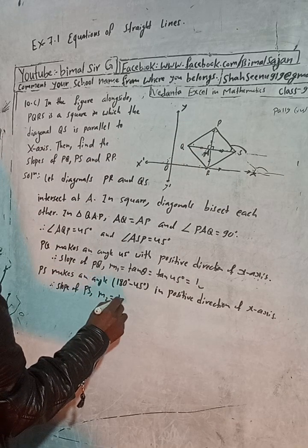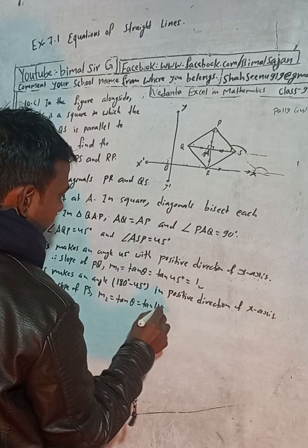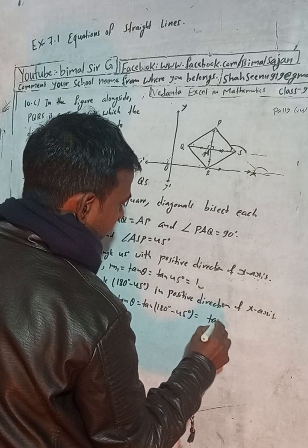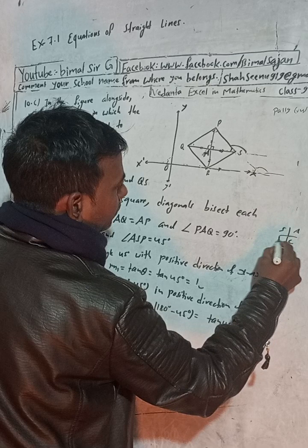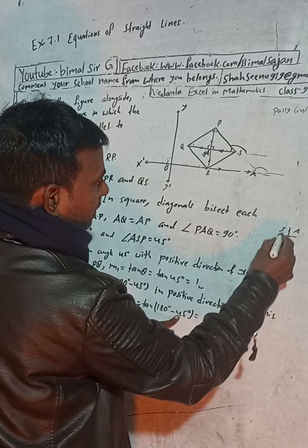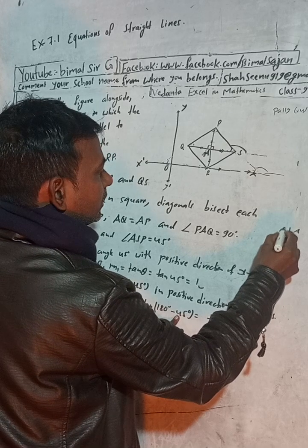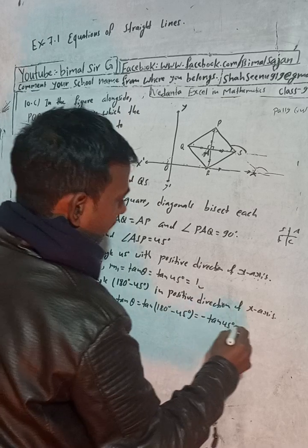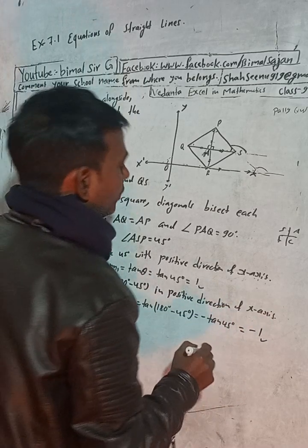So slope of PS — indicated as m2 — is tan(180° − 45°). Using the CAST rule, 180° − 45° is in the second quadrant, where tangent is negative. Therefore, m2 = −tan 45° = −1. The slope of PS is minus 1.